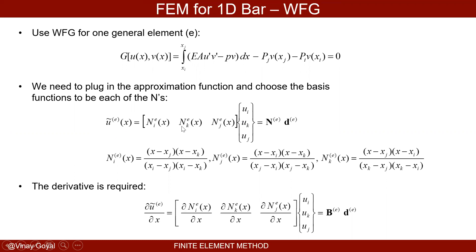These shape functions can be found in a very systematic way for quadratic elements. They satisfy the partition of unity — the sum of shape functions over the domain equals one. Evaluating the shape function at node K or node J gives zero at all other nodes and one at the node of interest. The same holds for nodes J and K — the Kronecker delta property.